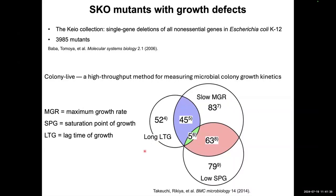We decided to compare these mutants to wild type to see what differences exist. These experiments were done on agar, a highly nutritious media. However, we thought that if we put these mutants in different nutritional conditions — as shown previously — they might show equal or even higher growth than wild type. Today I'll focus on the two groups that showed lower SVG and slower MGR.